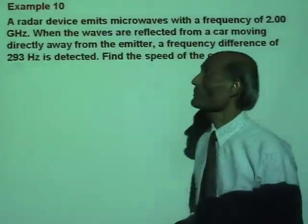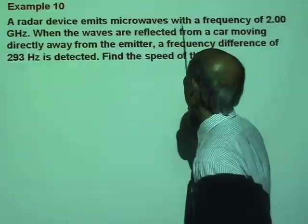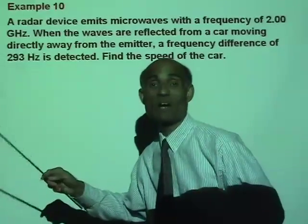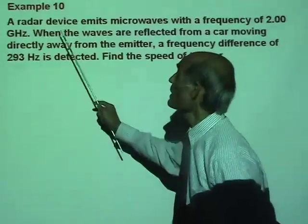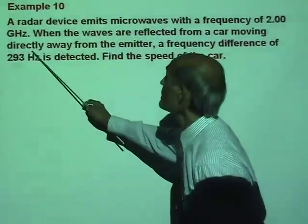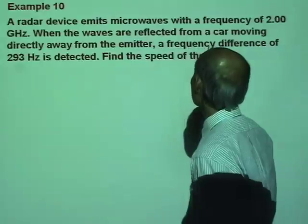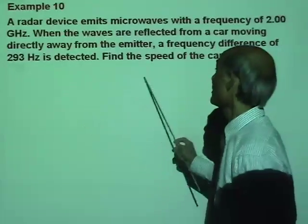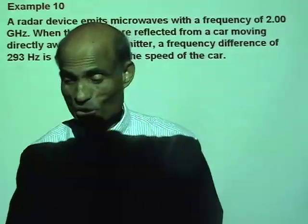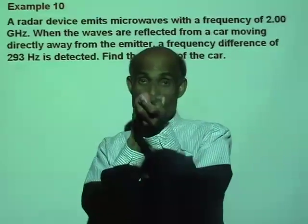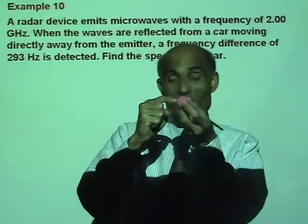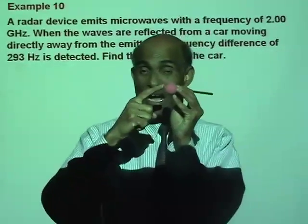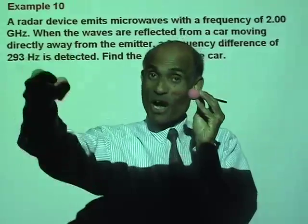Let's do another problem. A radar device emits microwaves with a frequency of 2 gigahertz, which is 2 times 10 to the 9 hertz. When the waves are reflected from a car moving directly away from the emitter, a frequency difference of 293 hertz is detected. Find the speed of the car. So we have a policeman standing with a radar device — it is the source — and the car is moving away. The car is the listener.